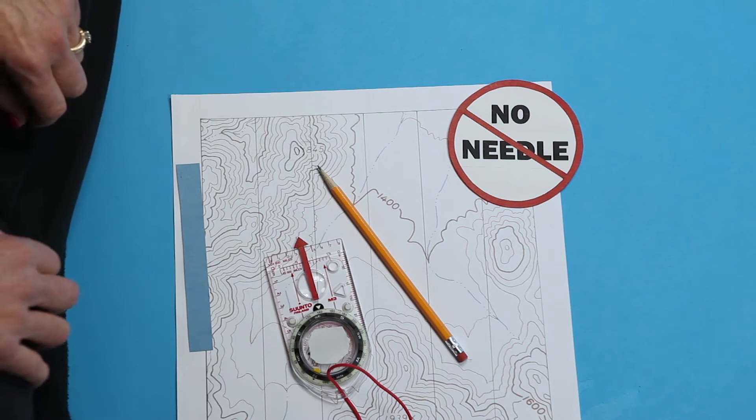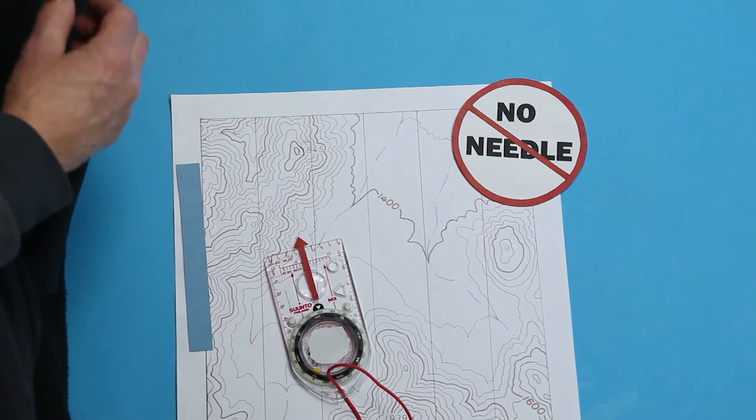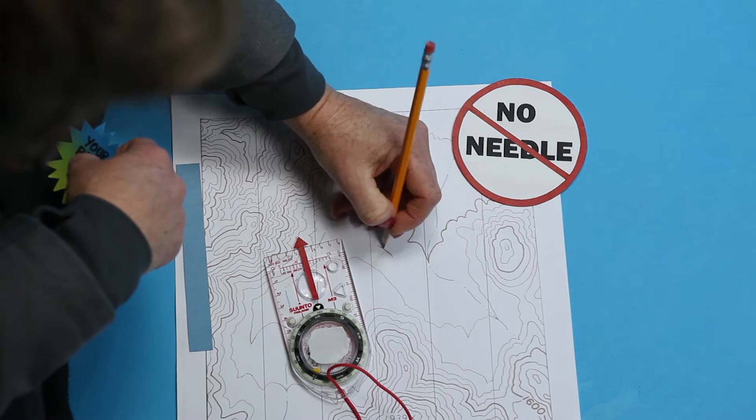A bearing taken off the map is called a map bearing. Taking a map bearing is super easy. For this, you'll need to know where you are on the map.